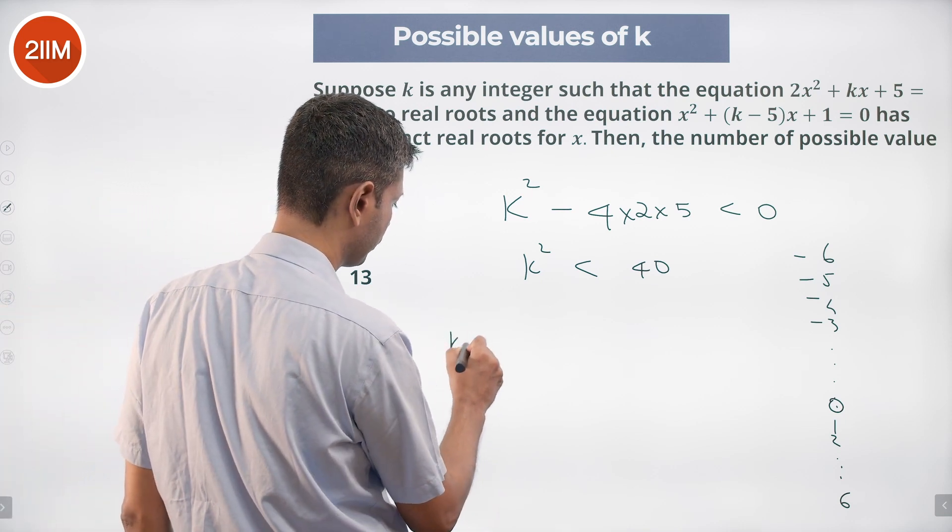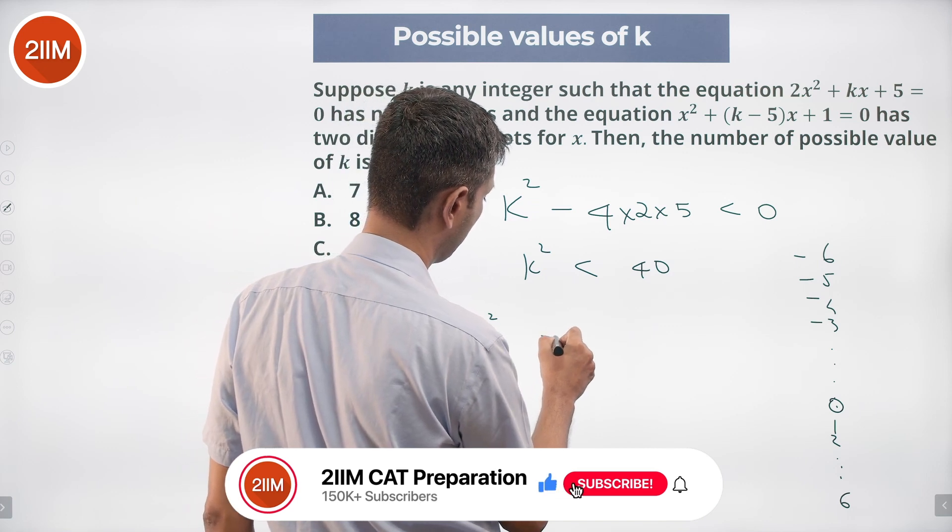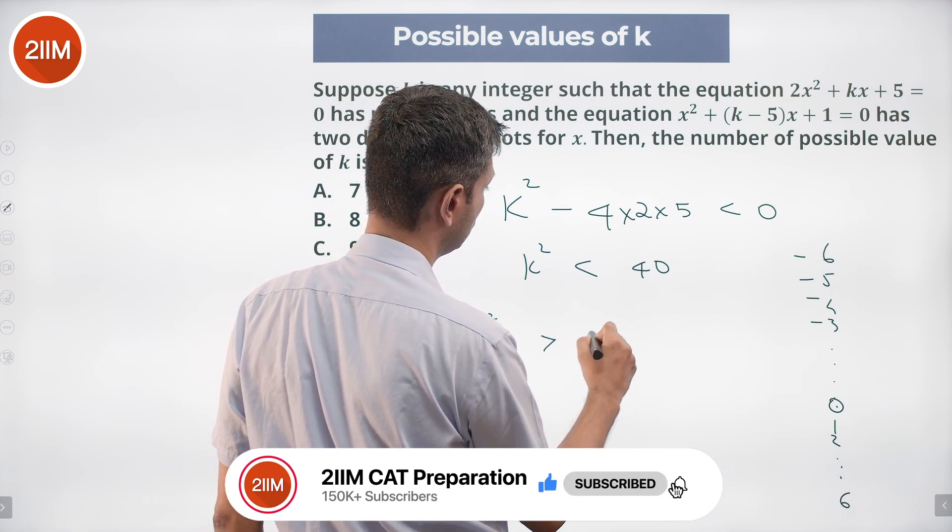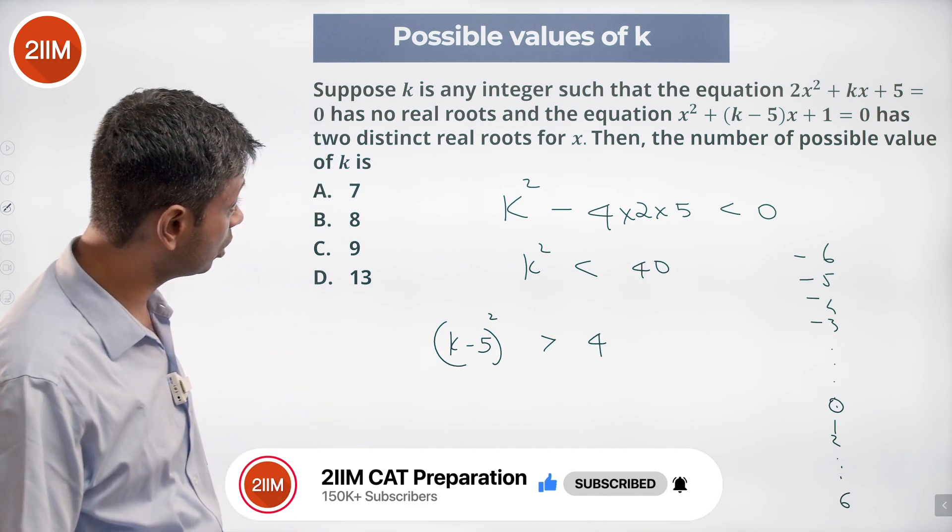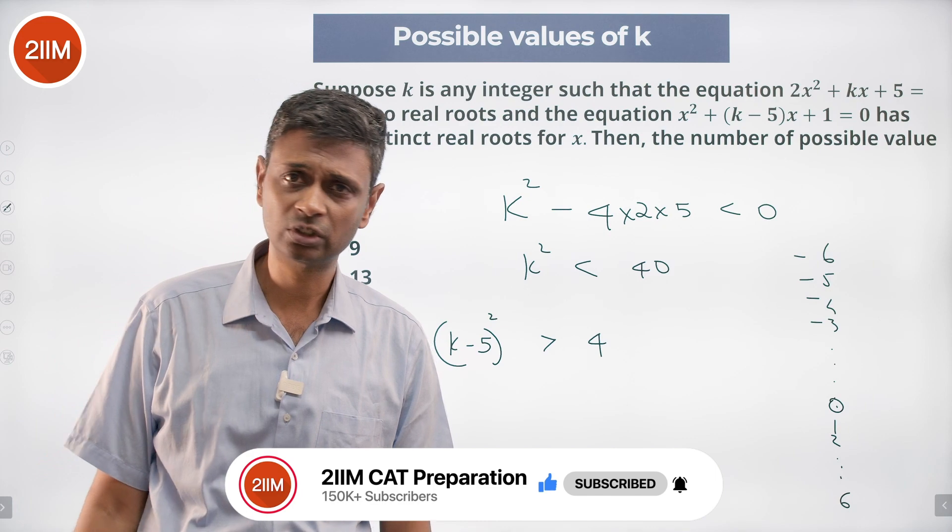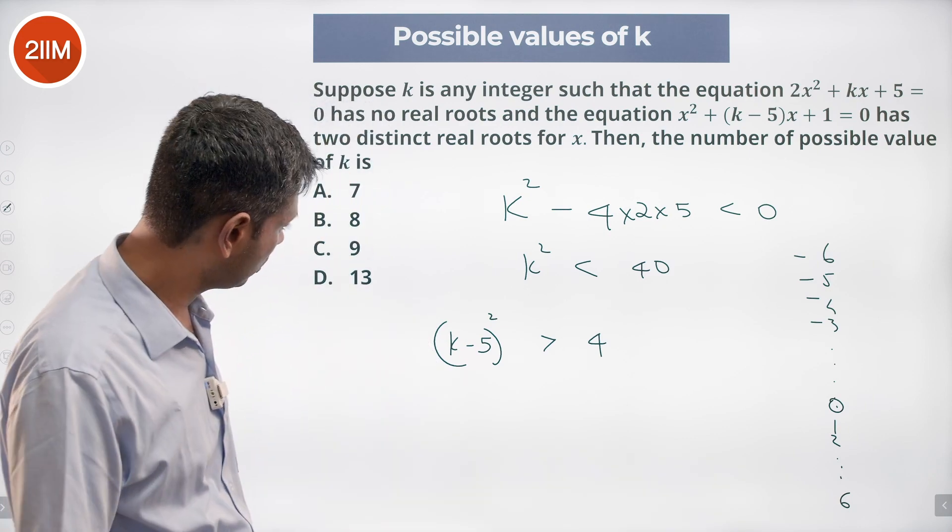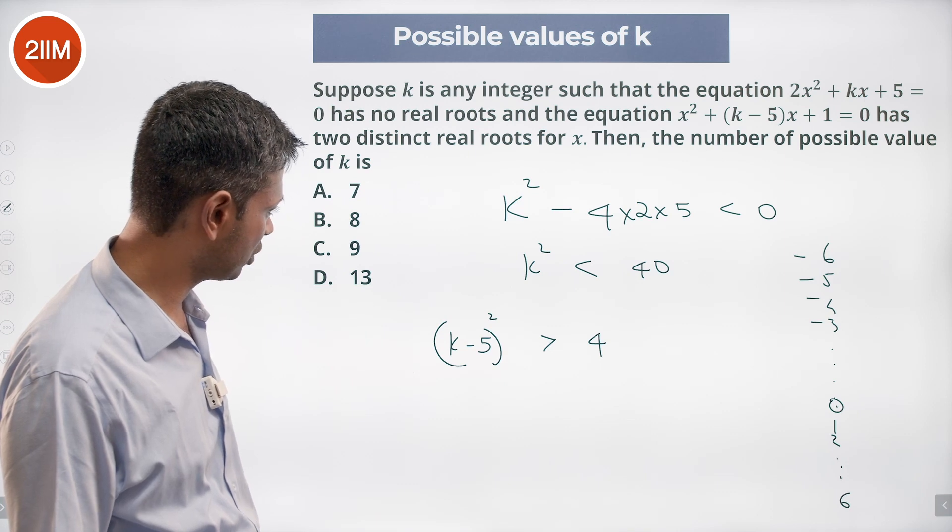So (k - 5)² > 4. It is not even greater than or equal to 4, it is greater than 4. (k - 5)² - 4 > 0. What values could this be? We have to simplify this.